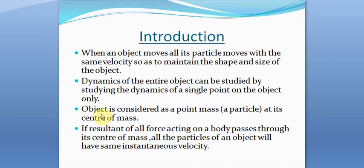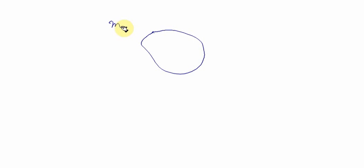If the resultant of all the forces acting on a body passes through its center of mass, then all the particles of the object will have the same instantaneous velocity. There is a point inside or outside this object where the object is considered to act like a point mass — we call this point the center of mass. Let's say this is the center of mass of this object of mass m.